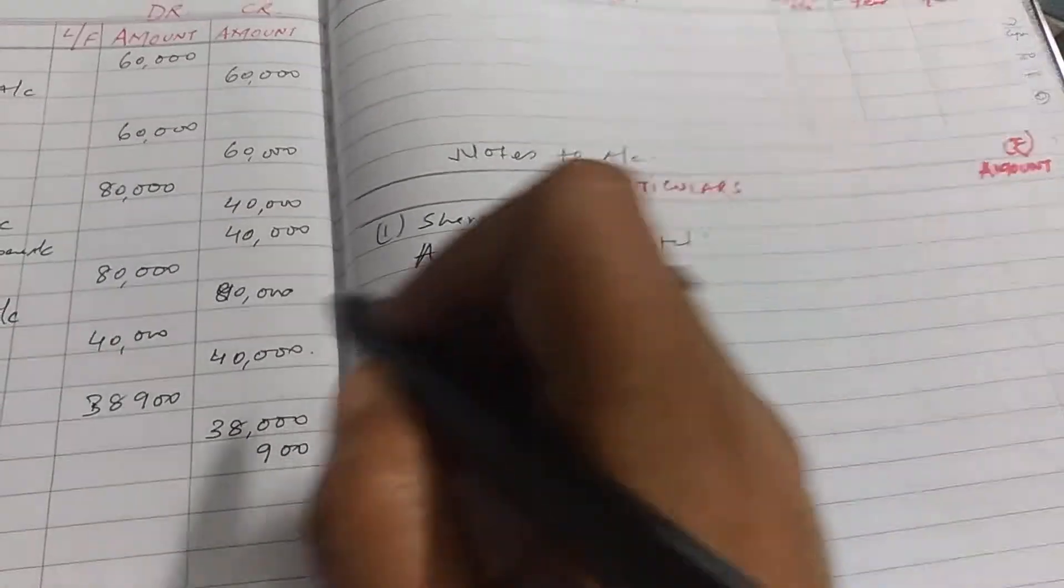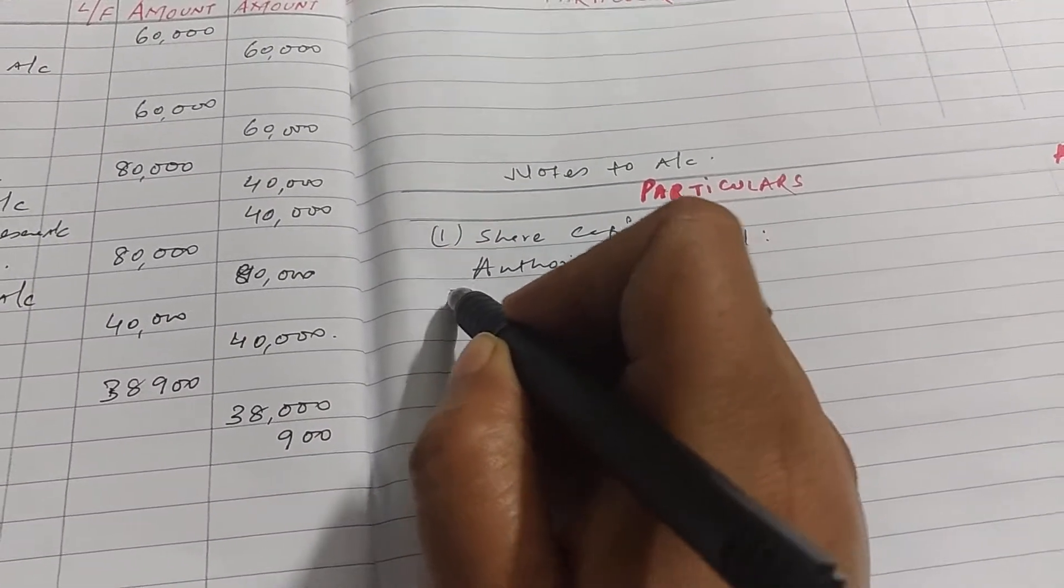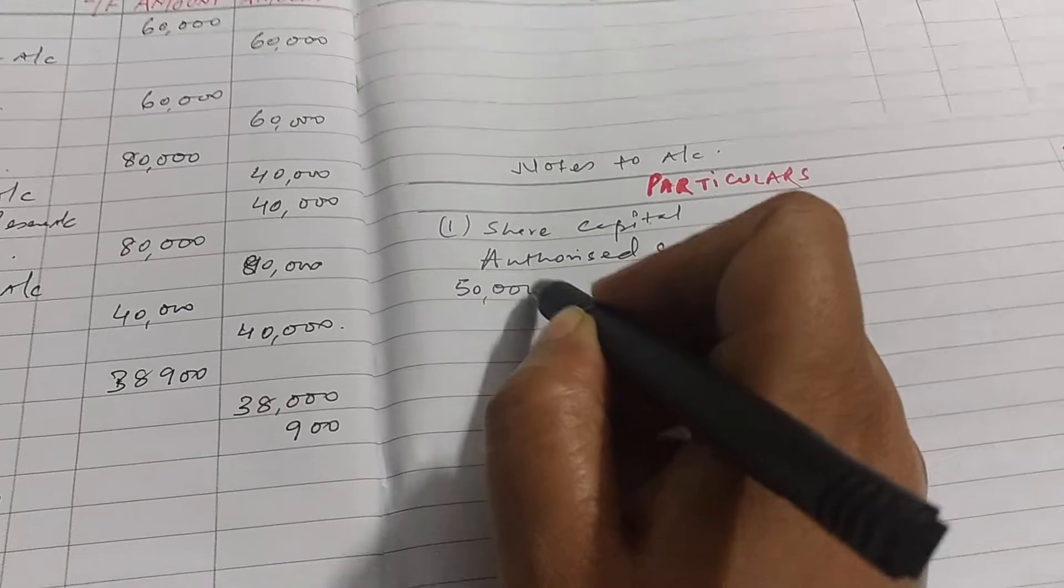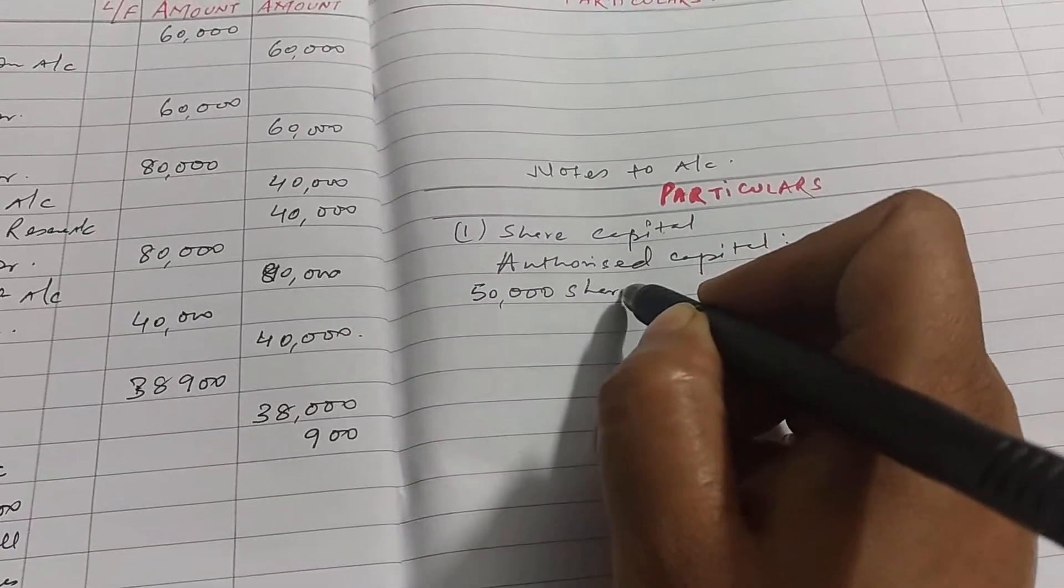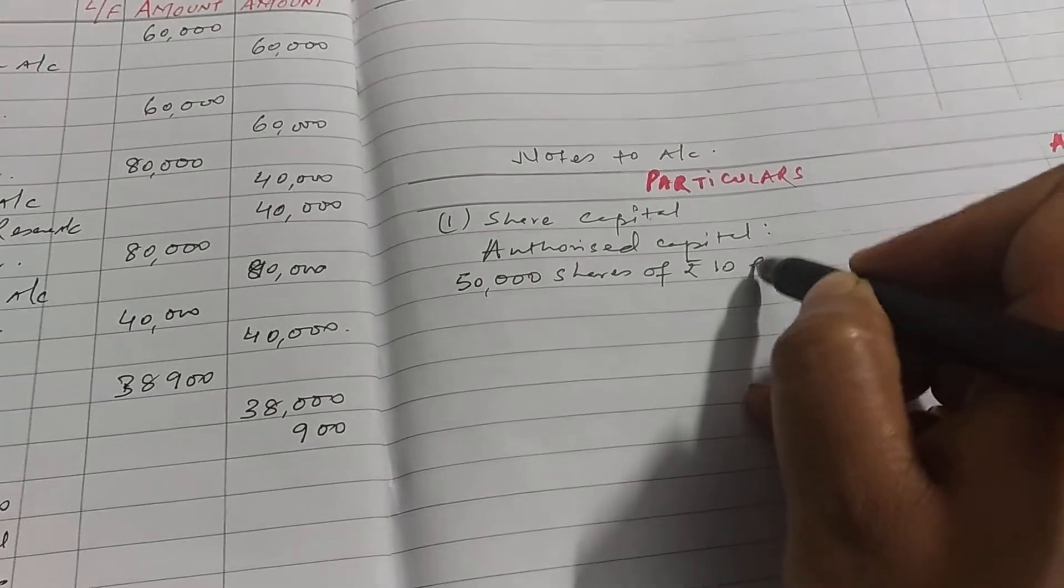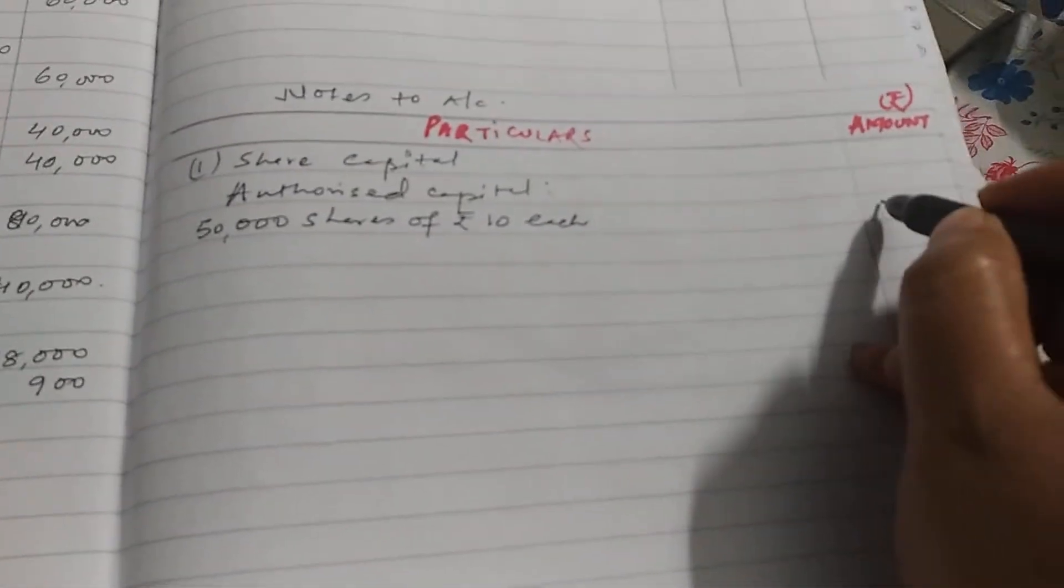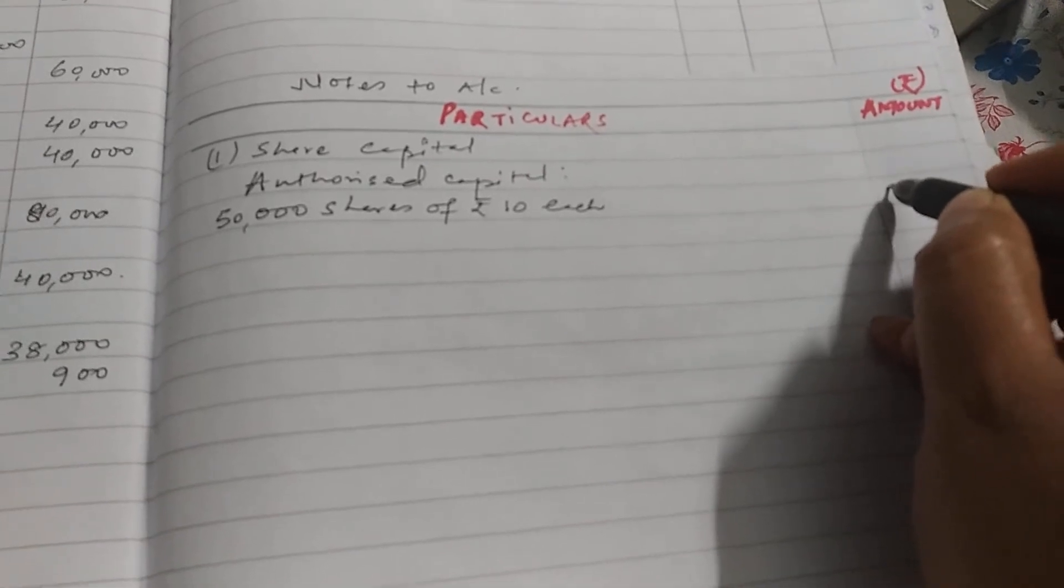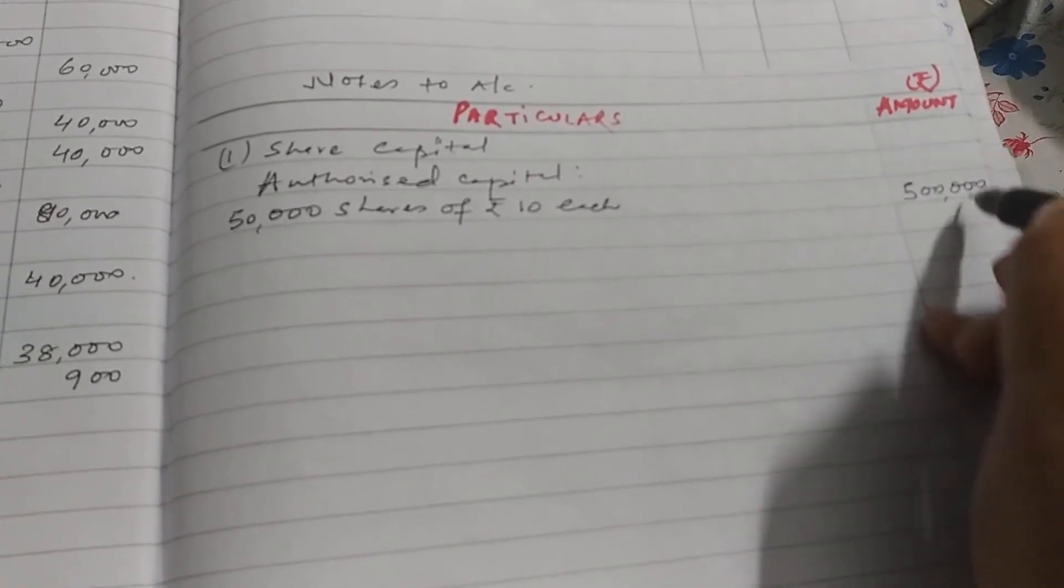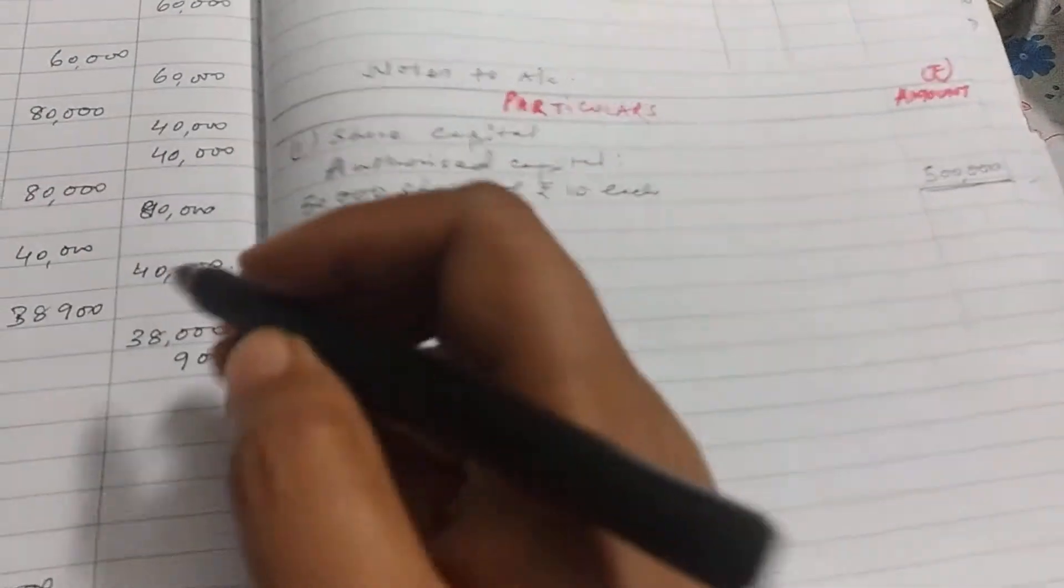And in authorized capital it's given in the sum how much authorized capital: 50,000 shares of rupees 10 each. So 50,000, we have to write in outer column. 50,000 into 10 is 5,00,000. We have to write in outer column. So authorized capital will be 5,00,000.